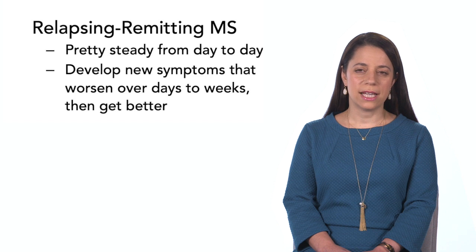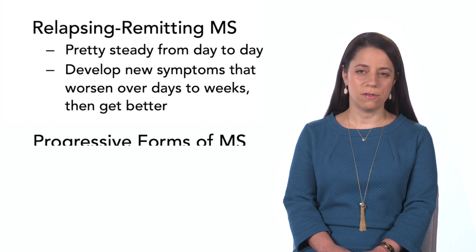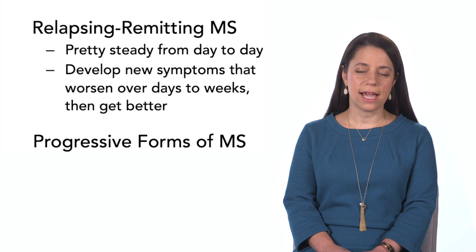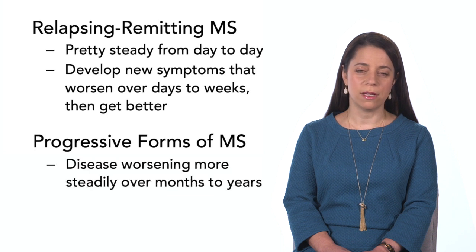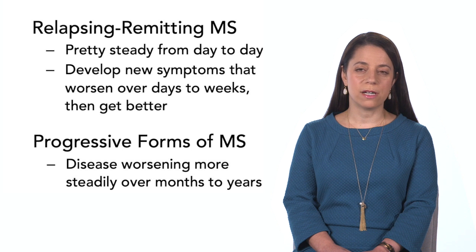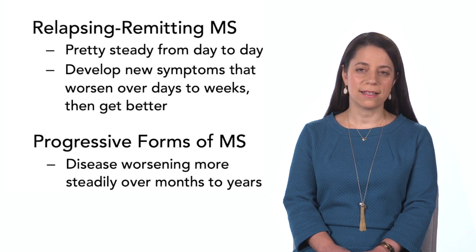A person that has progressive MS — and there are a few different sorts — has worsening that is just a little bit more steady over months to years. When we look at a graph of the different sorts of MS, it's really a mix and match of those two things.